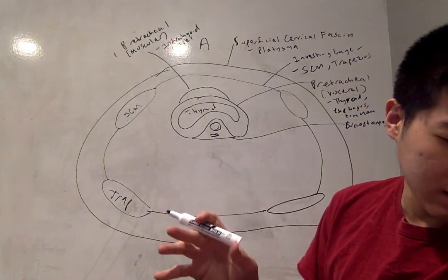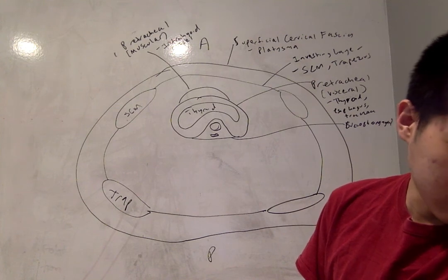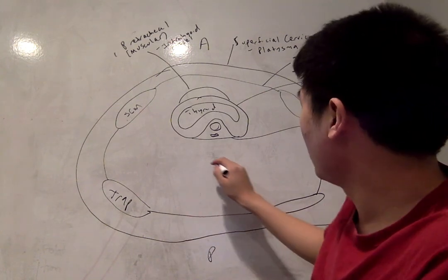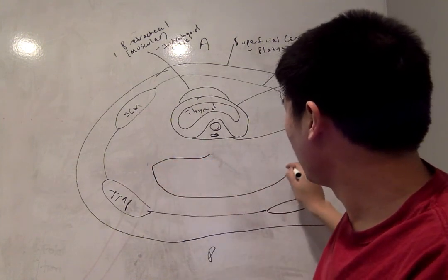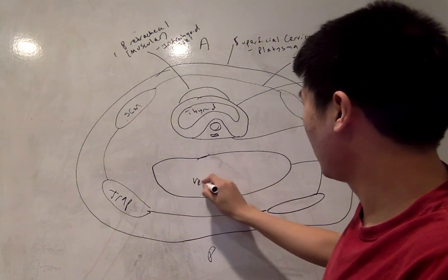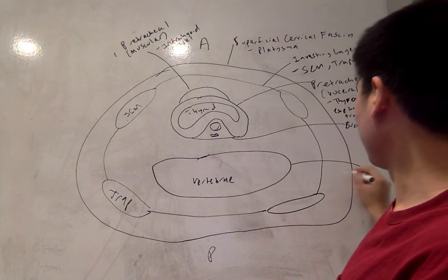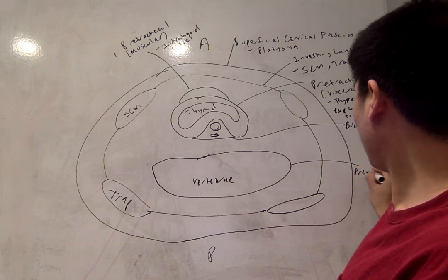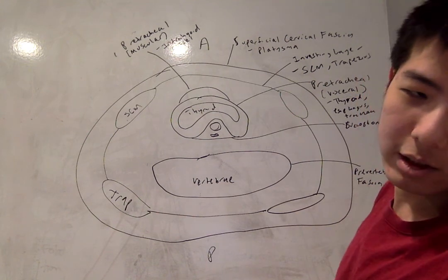And then the next thing we want to talk about is the pre-vertebral fascia. So there's going to be a large region back here, which houses the vertebra. And enclosing it is going to be the pre-vertebral fascia.